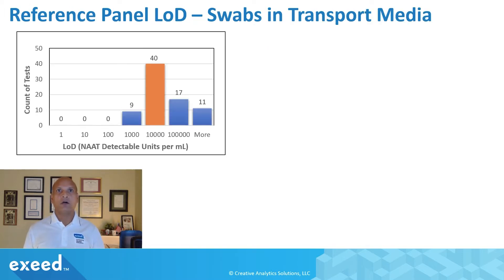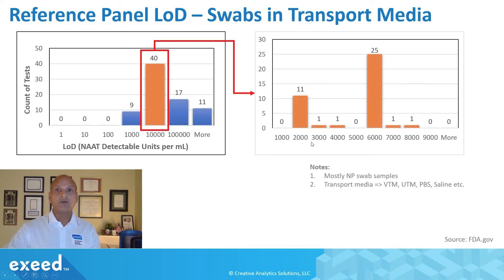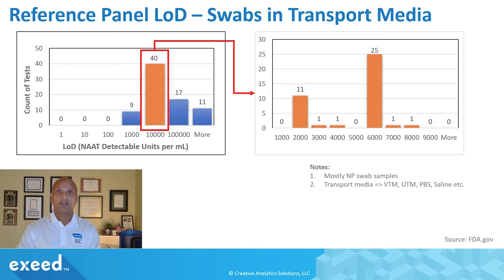Here is a summary of swabs in transport media — most of them are NP swabs. As you can see, the majority of tests are showing an LOD of about 10,000 NDU per mL. The largest bin ranges from 1,000 to 10,000, with 40 tests in that bucket, and the majority of those have an LOD of about 6,000. NAT stands for Nucleic Acid Amplification Test — this is the standard metric FDA is using to report LOD data.